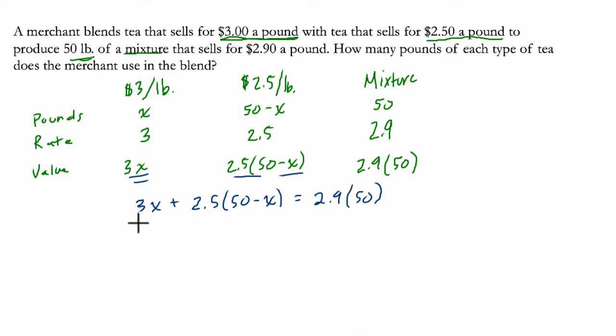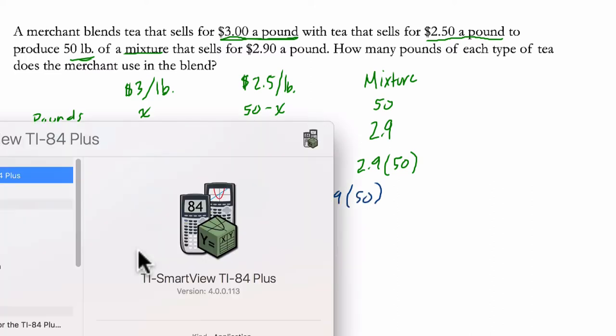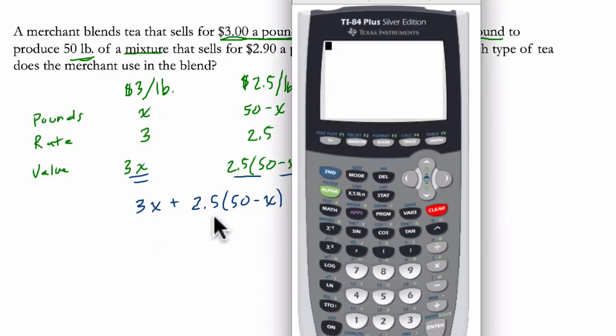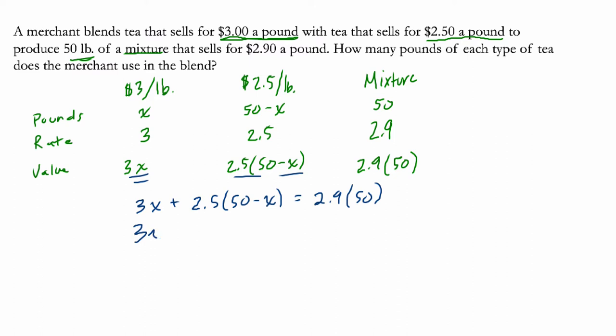So now we just kind of piece this together. I'm feeling tired, so I'm going to use my calculator here. So we've got 2.5 times 50. I can do that. 2 times 50 is 100. A half times 50 is 25, so that's 125. So we have 3X plus 125 minus 2.5X, and that equals 2.9 times 50.